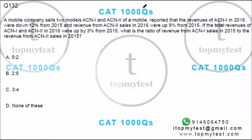It's a pretty simple application of allegation here. Let's see what we get. A mobile company sells two models, ACN1 and ACN2. The revenues of ACN1 in 2016 were down by 12% from 2015, and revenue from ACN2 sales were 9% up.